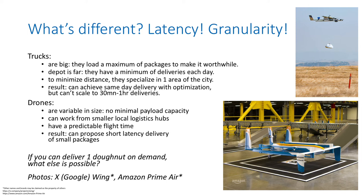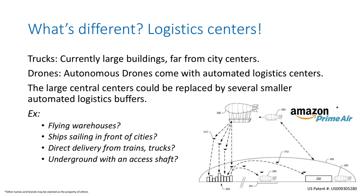You can deliver one donut on demand, and if you can do that, it means you can do a lot of other things. When you start replacing trucks with drones, you also change the logistics centers themselves. For trucks, they have to be big and far from the city center. With drones, you can have small, totally automated logistics centers integrated into cities — many small centers instead of one big one. You could have flying warehouses, ships sailing in front of cities, direct delivery from trains or trucks, and underground logistics centers.